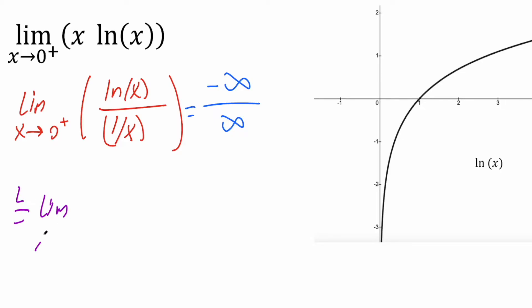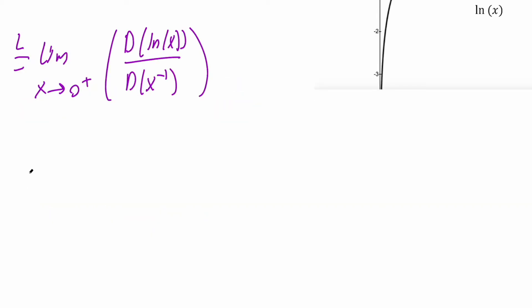So I'm going as x approaches zero to the right. So what we're going to do is take the derivative of the numerator and the derivative of the denominator. So we can just say d for derivative of ln(x) divided by d of this piece one over x. And one over x is the same as x raised to negative one. That might be easier for you to see how we take the derivative. And so let's do it.